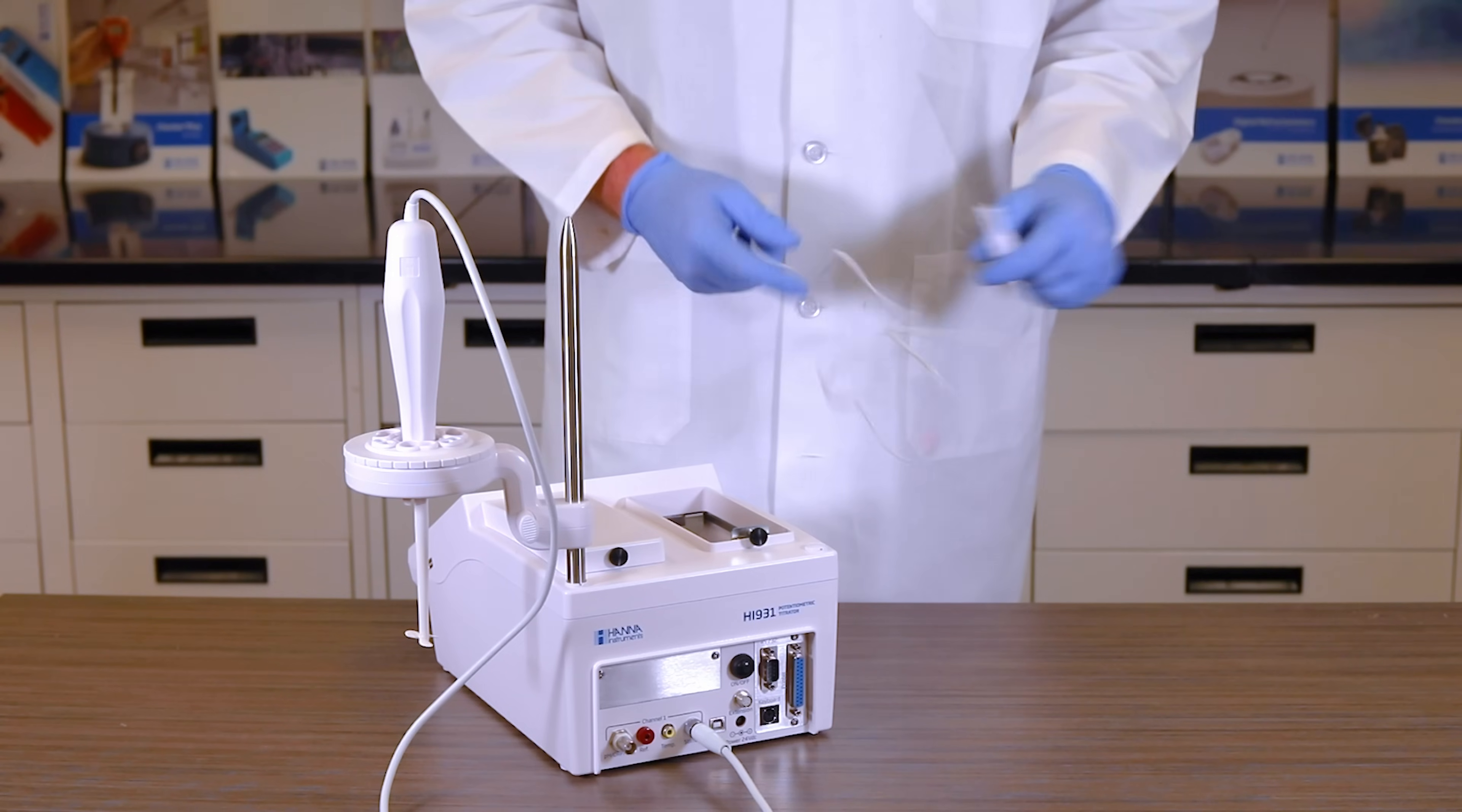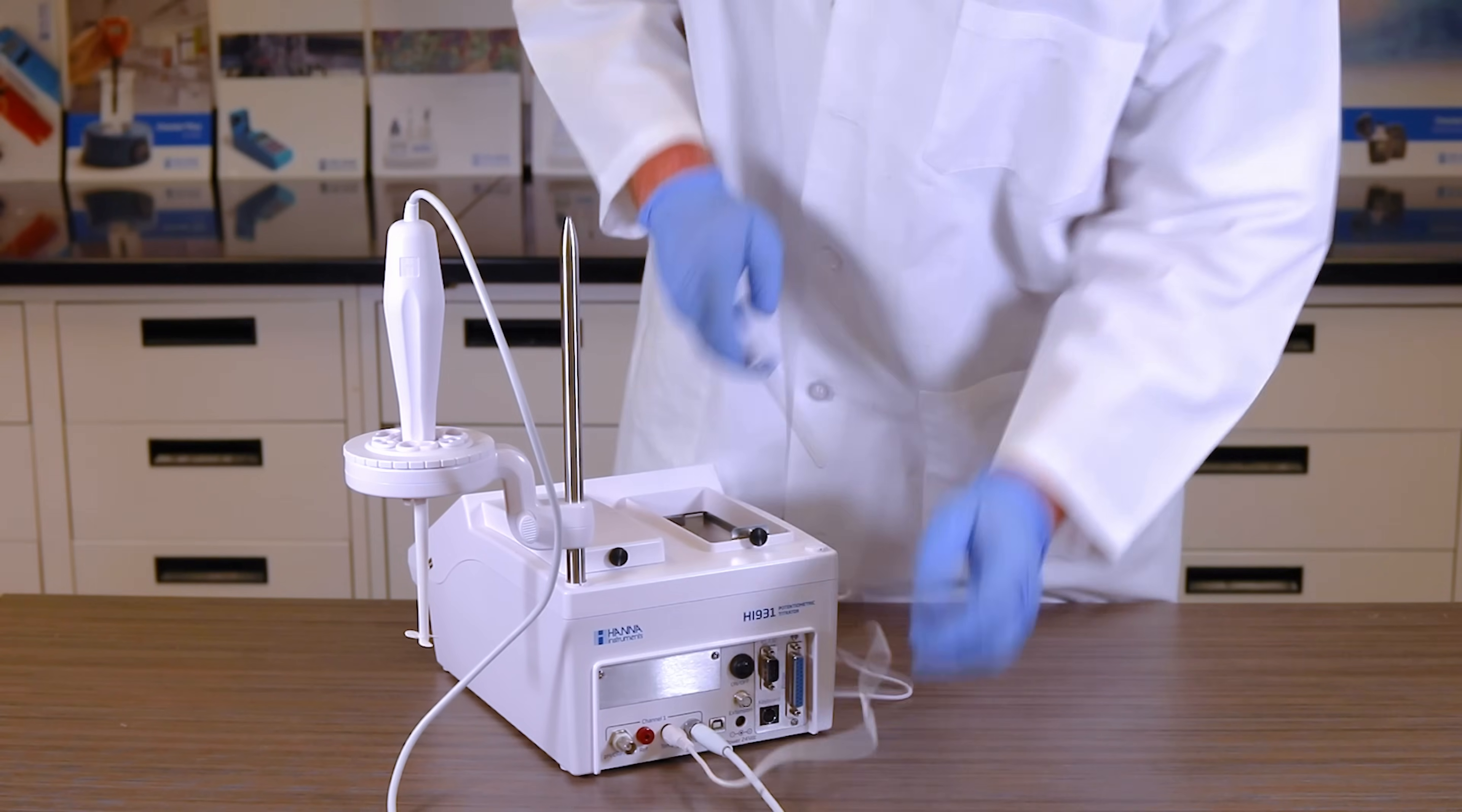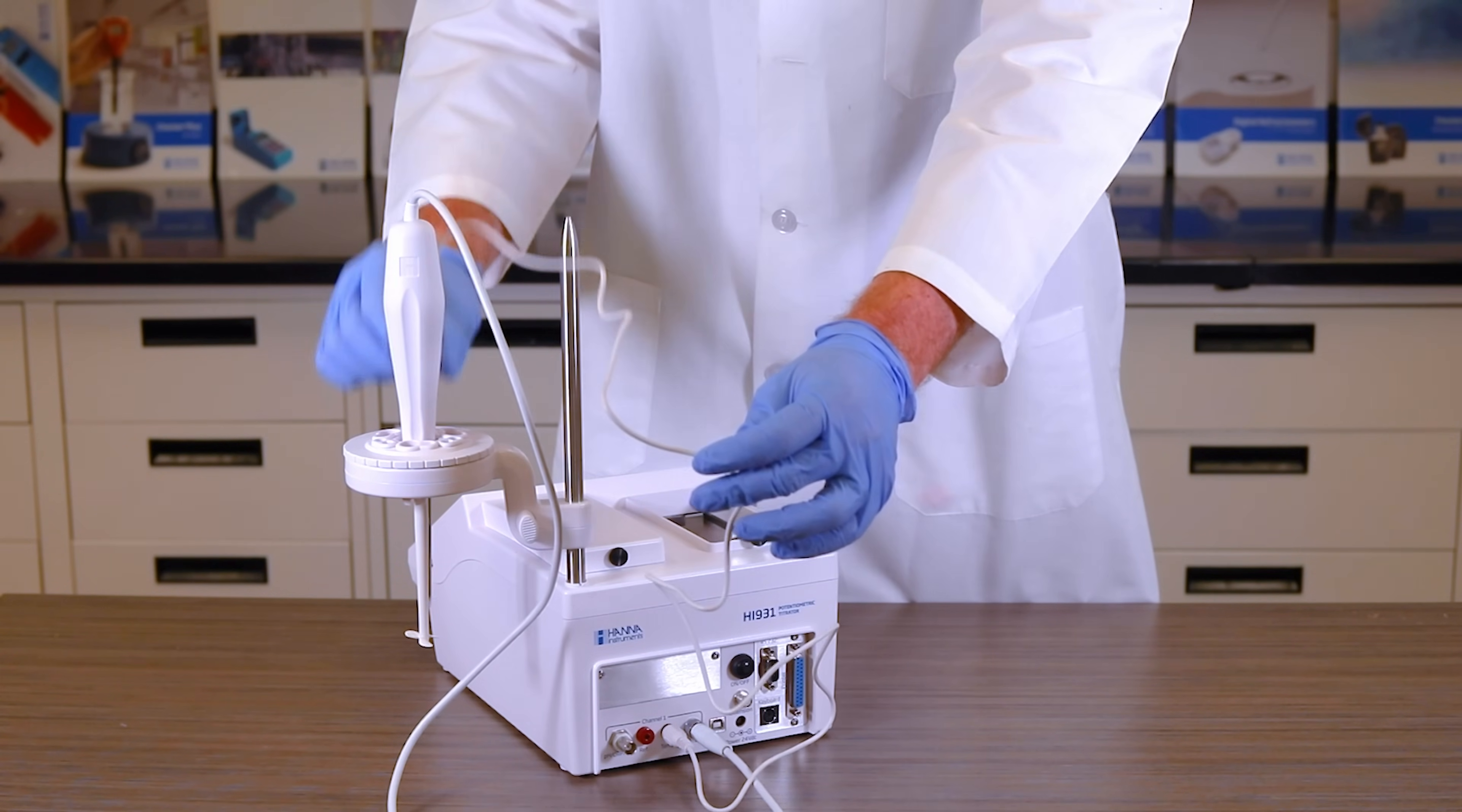Find your temperature probe and plug it into the back of your titrator. Place it into the temperature slot of the plastic assembly holder.